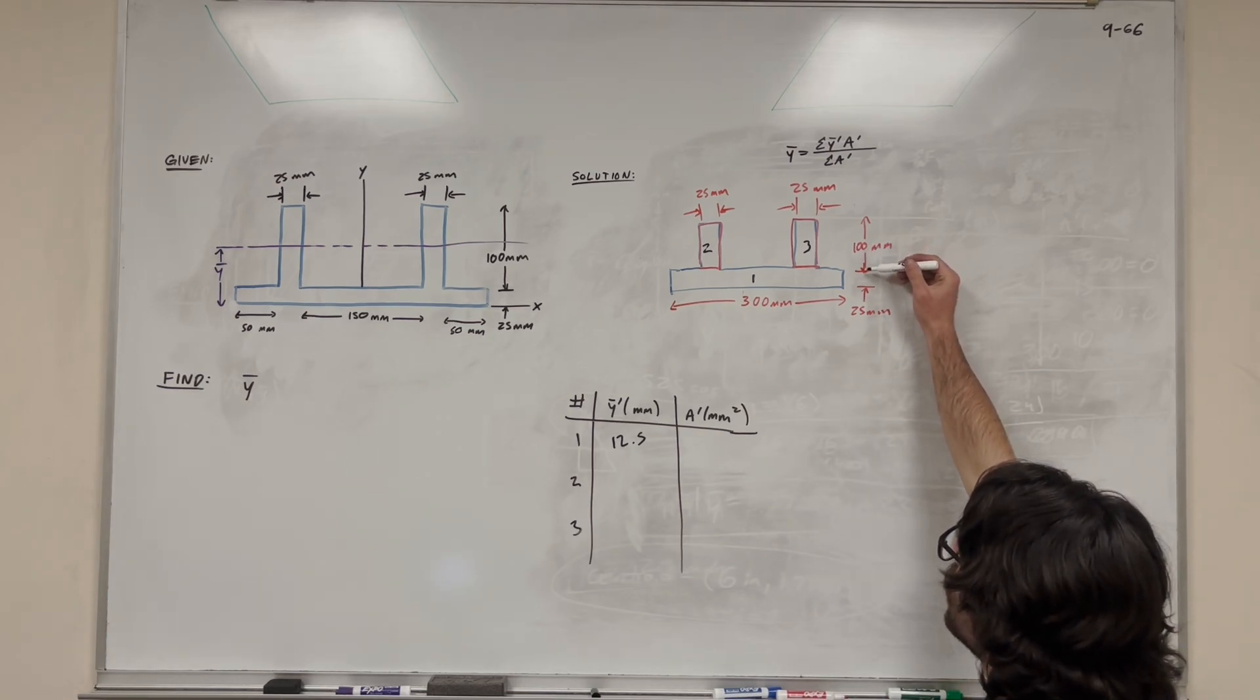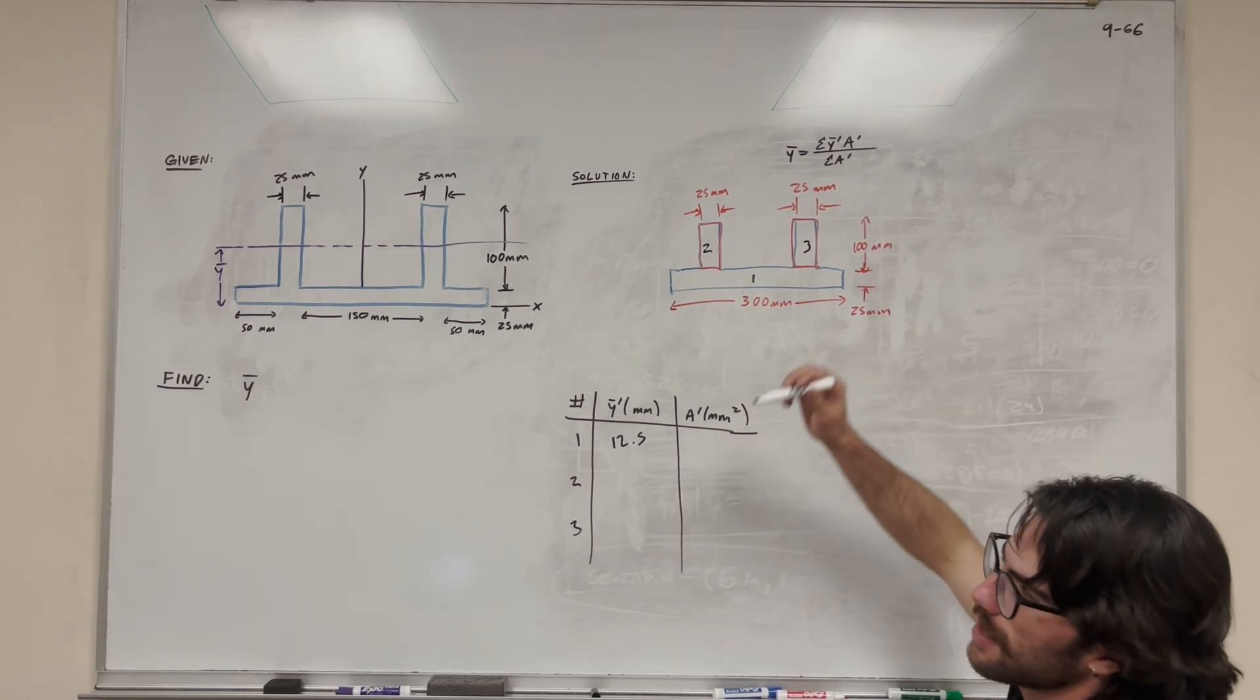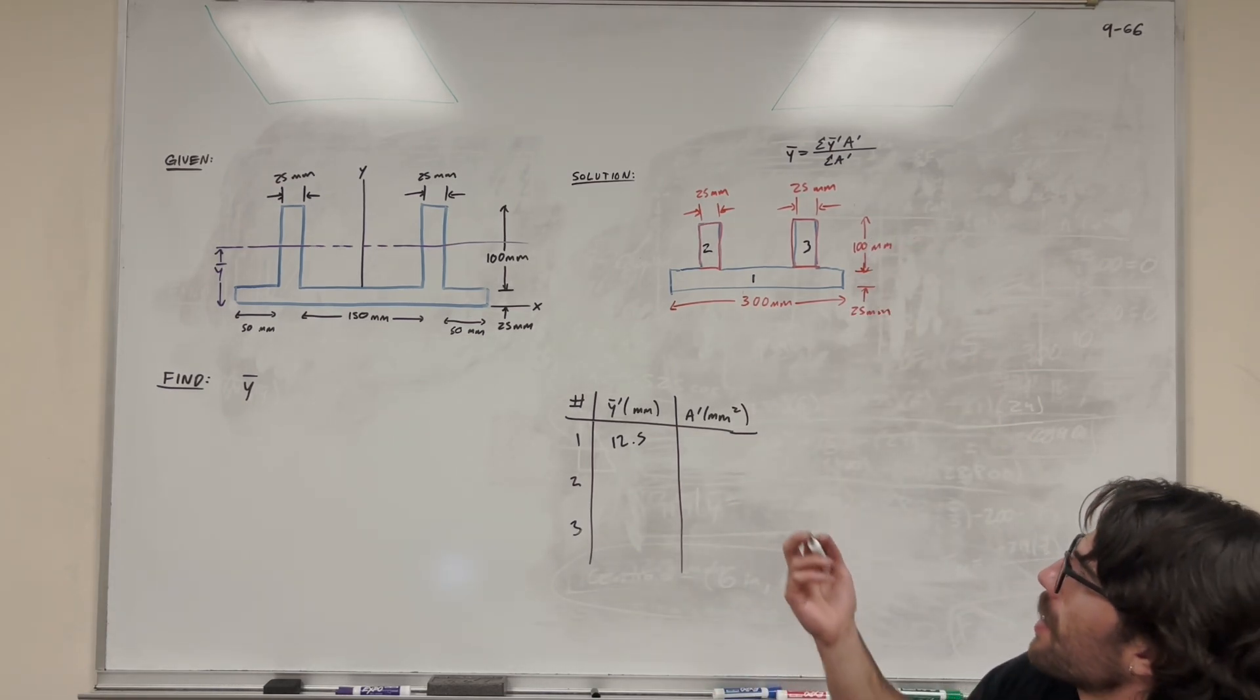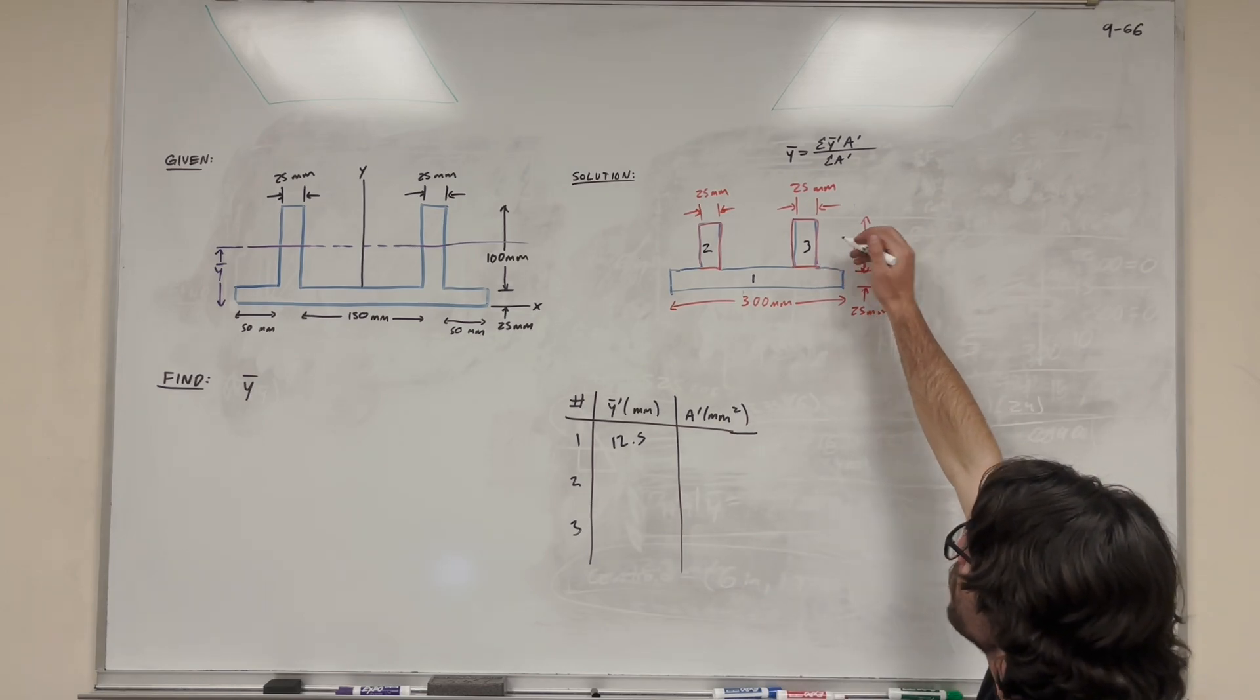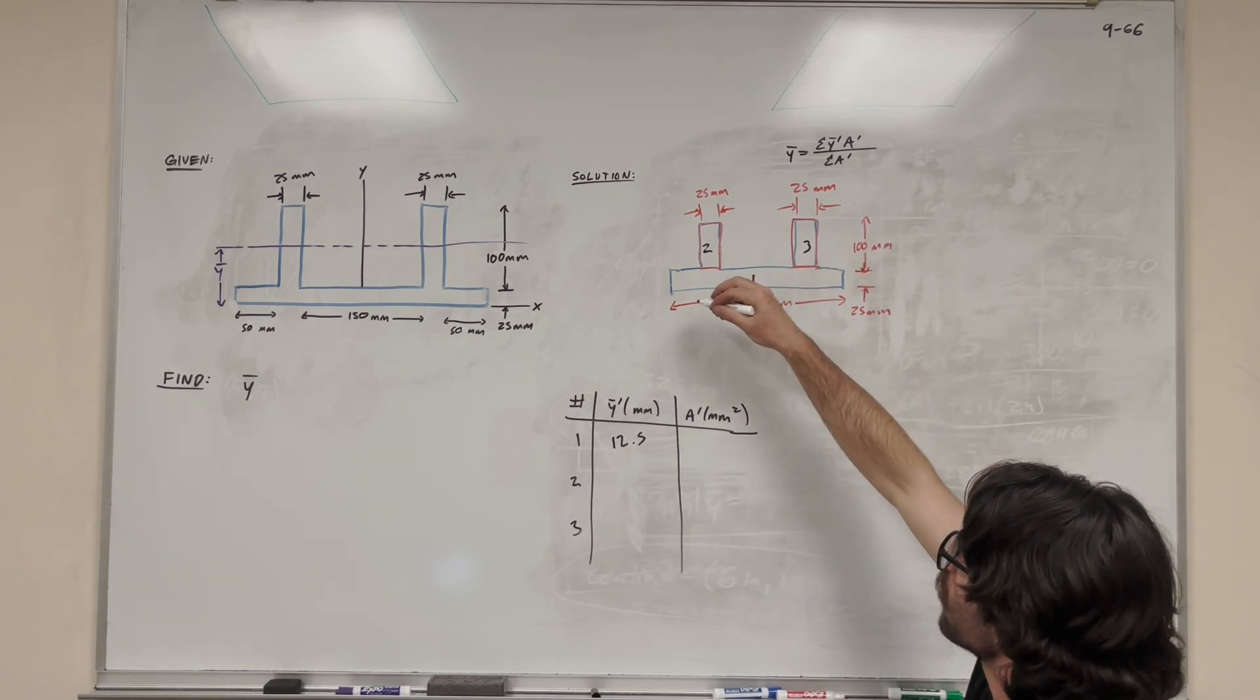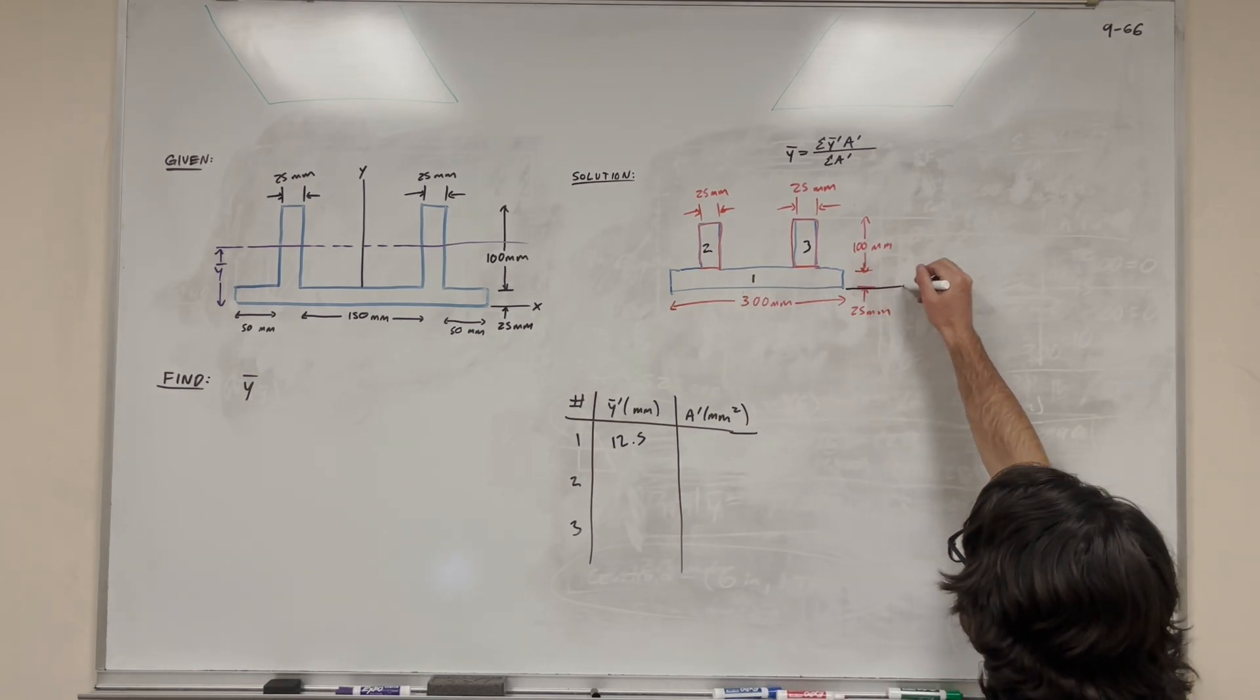Then for these shapes, it's 100 millimeters tall, so half of that is 50 millimeters. But remember that y bar is not just coming from the bottom of the shape, it's coming from the bottom of this whole big shape, which is the x-axis here.